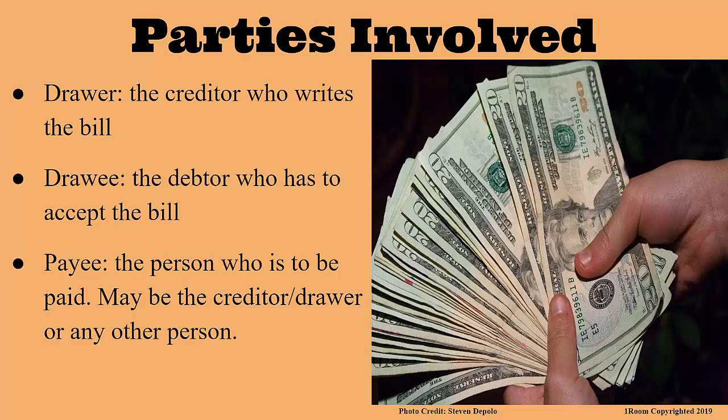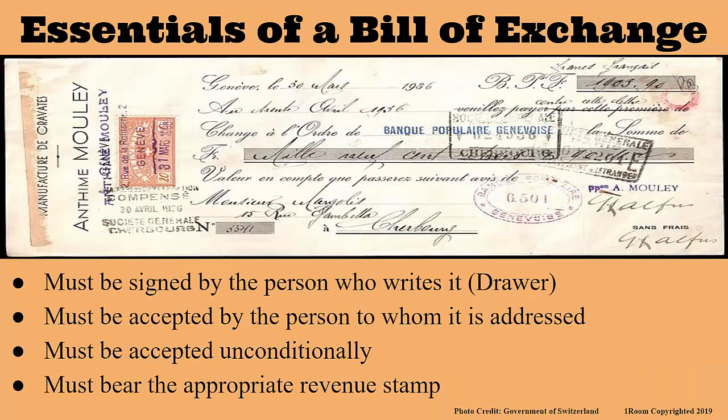There are essential things that you must note down in a bill of exchange. Of course, it has to be valid, and what makes it valid is the signature of the drawer. The drawer must sign it, and the person to whom it is addressed must also accept it. This acceptance must be unconditional. Lastly, it must also have the appropriate revenue stamp.